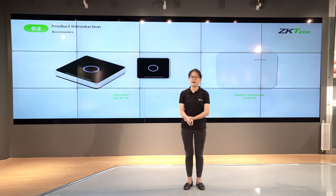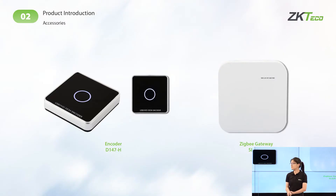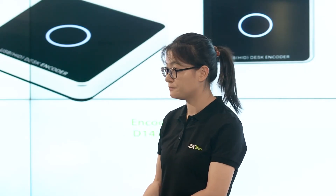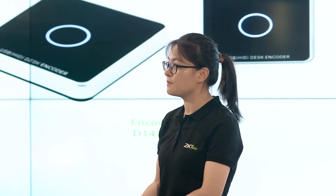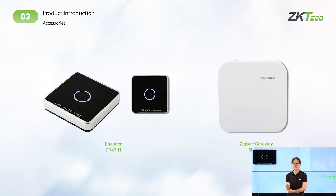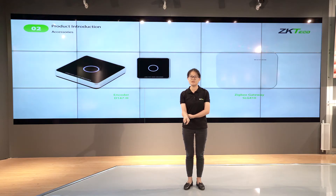Next are the accessories needed for the whole solution. The first one is the decoder, which you may need for issuing cards for backup or emergency use. The next one is the ZigBee gateway, called SLG410. With ZigBee communication, you can connect up to 10 locks within 20 meters at one time.